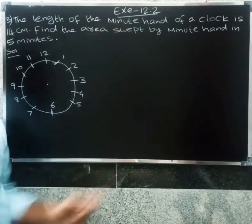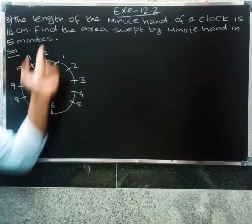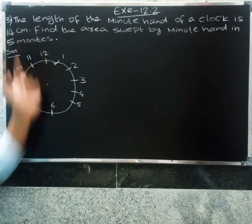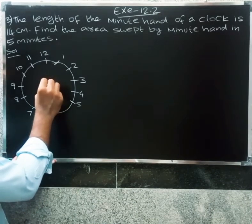The minute hand rotates around the clock. The length of the minute hand of a clock is 14 centimeters. Find the area swept by the minute hand in 5 minutes.